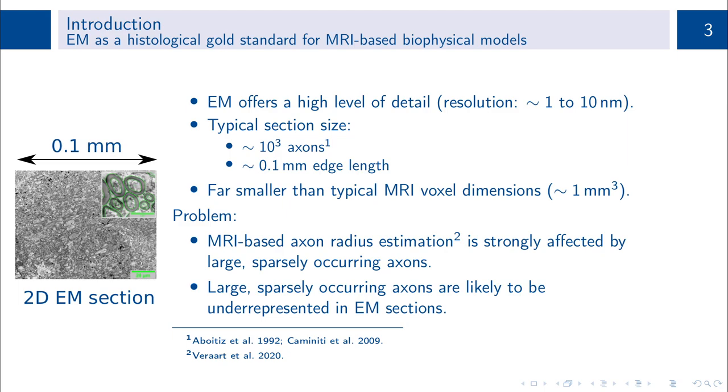This is a problem because MRI-based axon radius estimation is strongly affected by large, sparsely occurring axons, which are likely underrepresented in these small EM sections.